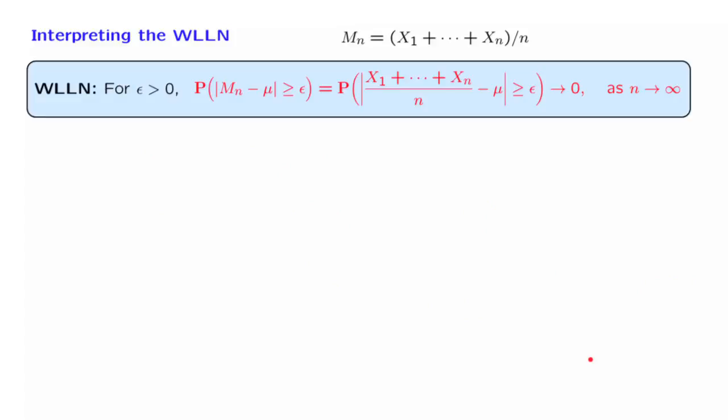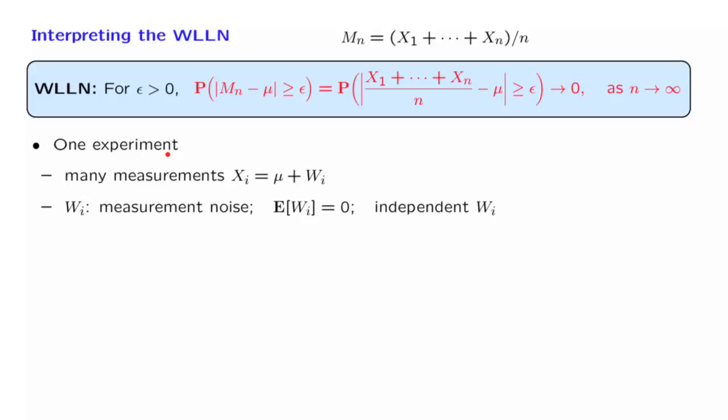Let us now interpret the weak law of large numbers. As I already hinted, we have to think in terms of one long experiment. And during that experiment, we draw several independent random variables drawn from the same distribution. One way of thinking about those random variables is that each one of them is equal to the mean, the true mean, plus some measurement noise, which is a term that has 0 expected value. And all of these noises are independent. So we have a collection of noisy measurements.